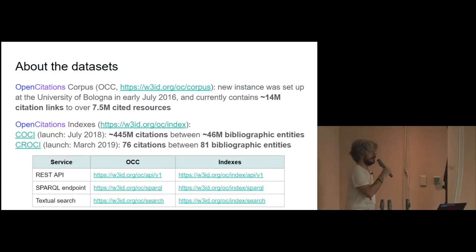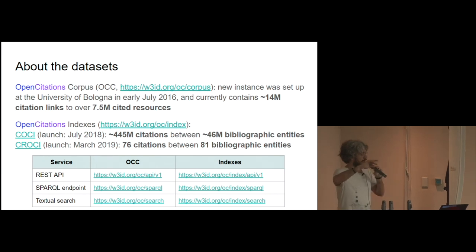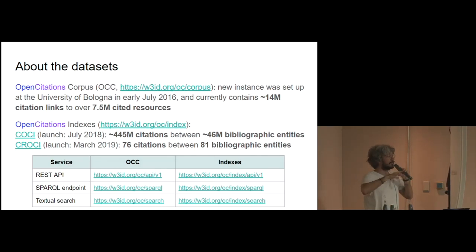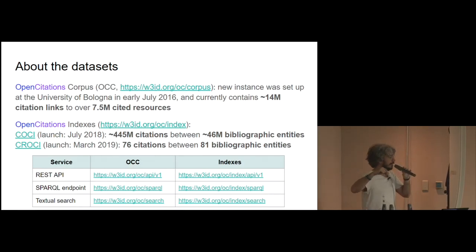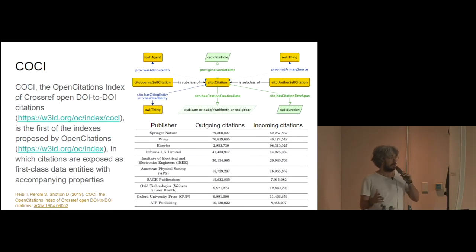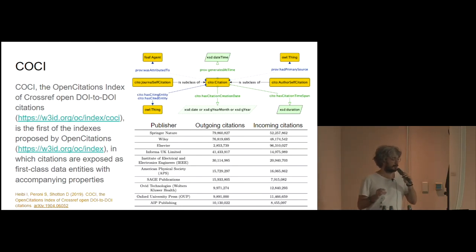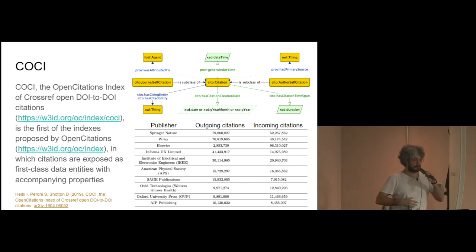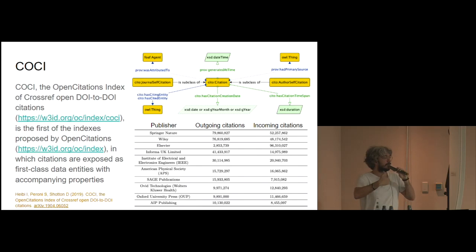All these services can be accessed and queried in different ways. We made available three different interfaces: a REST API for both datasets, a SPARQL endpoint for those expert in semantic web technologies, and also textual search — so if you are a human and you want to look at some of the data, there are textual interfaces available. COCI, to provide a brief introduction, is the OpenCitation Index of Crossref open DOI-to-DOI citations, built by taking all the DOI-to-DOI links included in Crossref, converting them to RDF, and putting all our services in front of it.